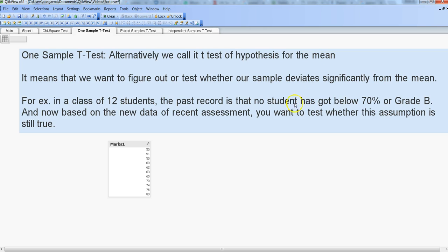In this case, the example I've given: in a class of 12 students, the past record shows that no student has gotten below 70% or Grade B. That's the learning we have from previous encounters or previous results - nobody has gone below 70%.